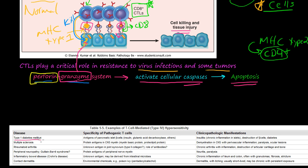In type 1 diabetes, the antigens of the pancreatic islet beta cells are somehow targeted for killing. The pancreas undergoes apoptosis, you get chronic inflammation of the islet cells, destruction of the beta cells, and ultimately diabetes. In multiple sclerosis, protein antigens in the CNS myelin become triggered, leading to demyelination in the central nervous system with perivascular inflammation, resulting in paralysis and ocular lesions.